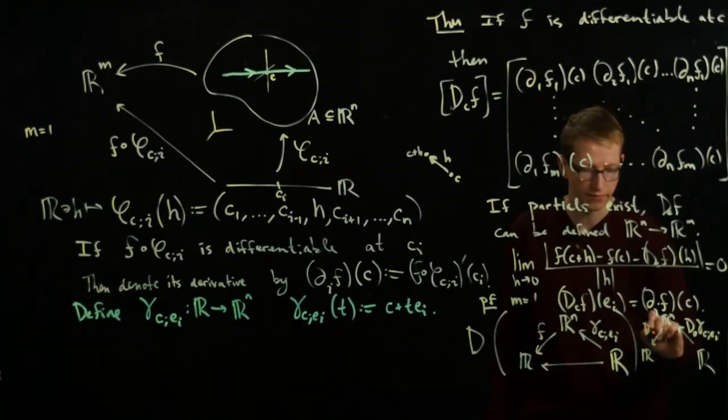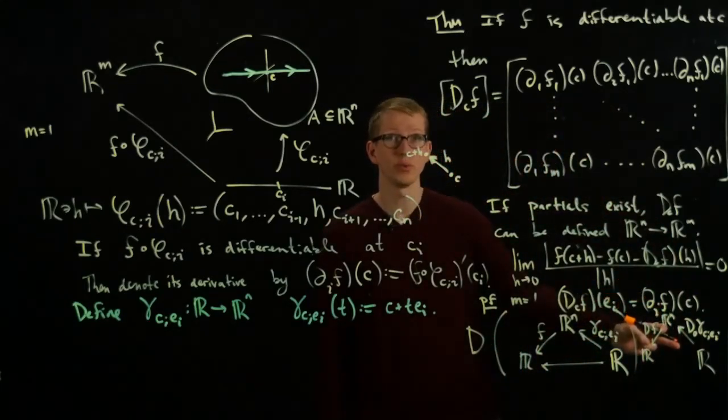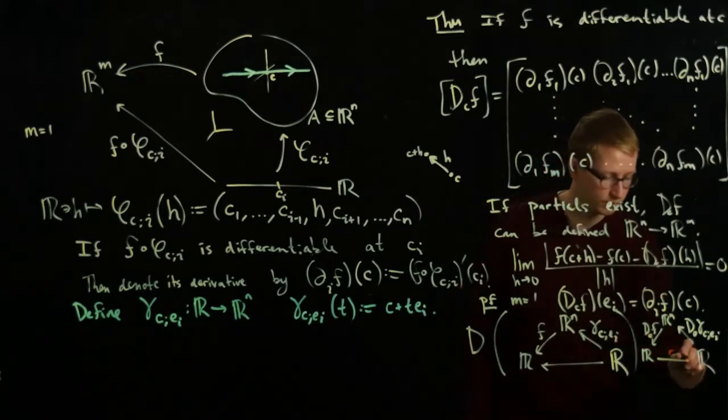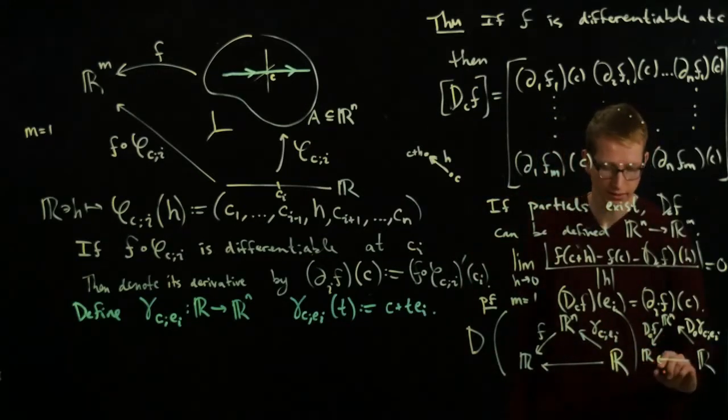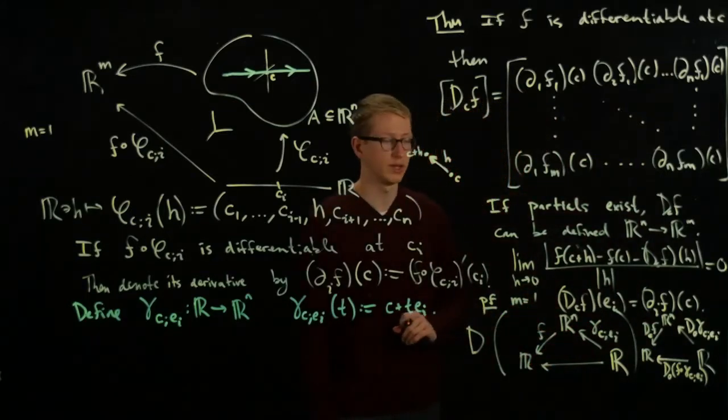Applying D to this diagram, we get the differential of γ. We know that the differential of γ is just going to give us a single vector. This is D at 0 of γ_C,e_i, and here we have D of F evaluated at C. This diagram commutes by the chain rule.